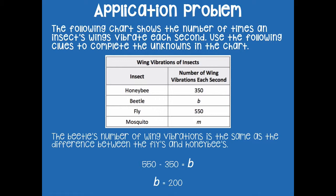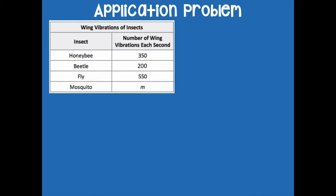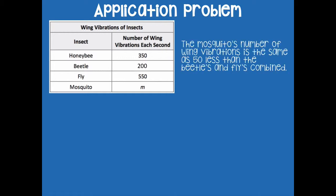200 is the number of wing vibrations each second for a beetle. That's a one-step problem because we only had to do one operation to solve it. Now I've filled in 200 for the beetle because that's no longer an unknown piece of information.